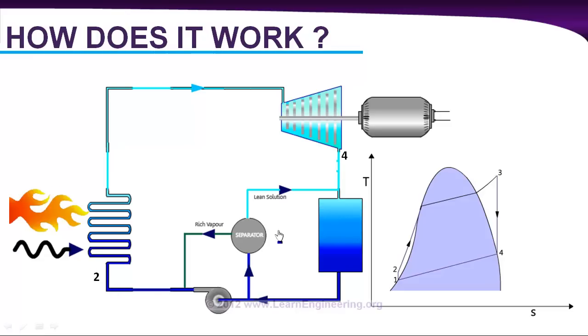After this point 4 we are rejecting heat to the surrounding, and after this point 2 we are absorbing heat from some external agency. So why can't we supply some amount of heat from point 4 to point 2, which will save some energy and will obviously increase the power plant efficiency. That is exactly what we do here.